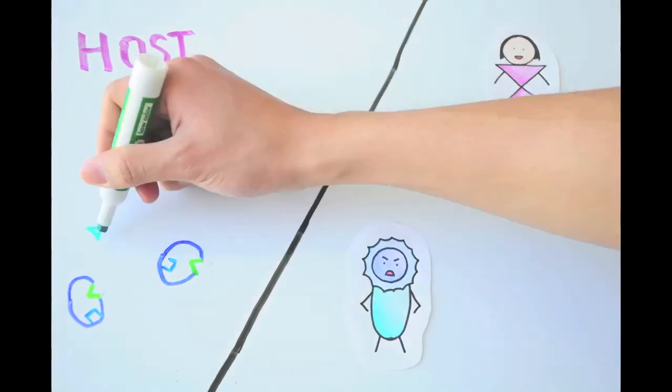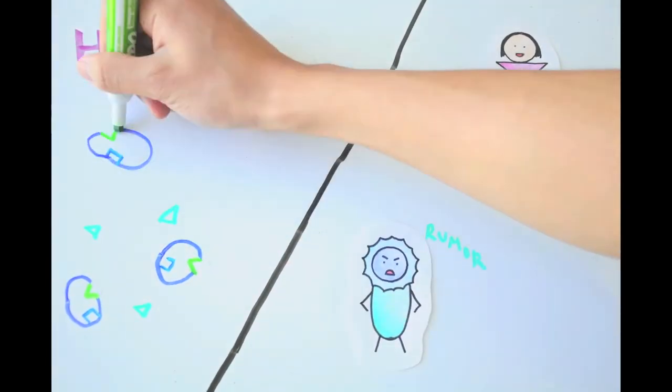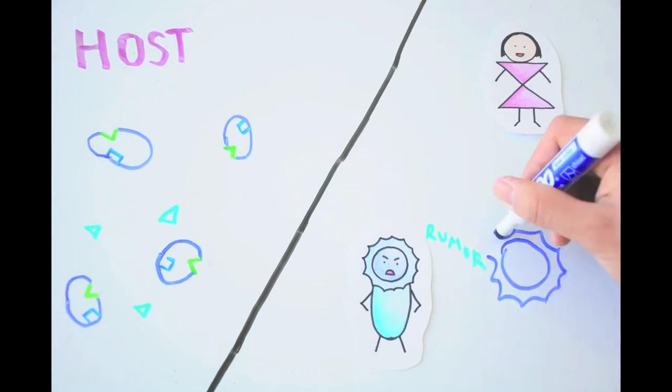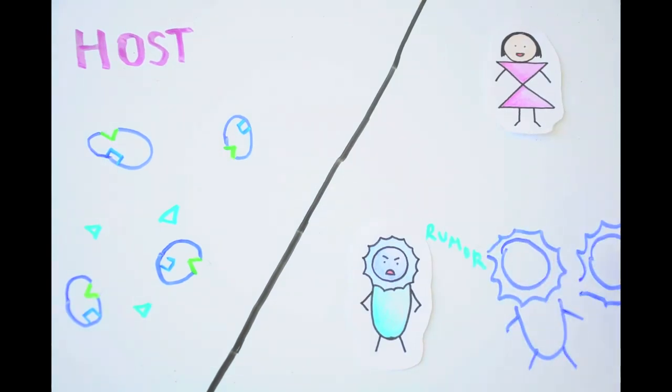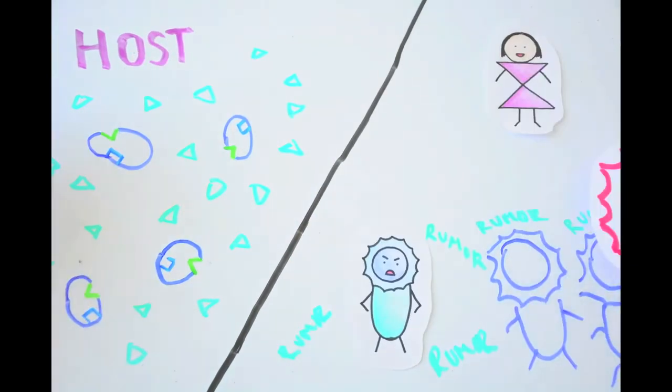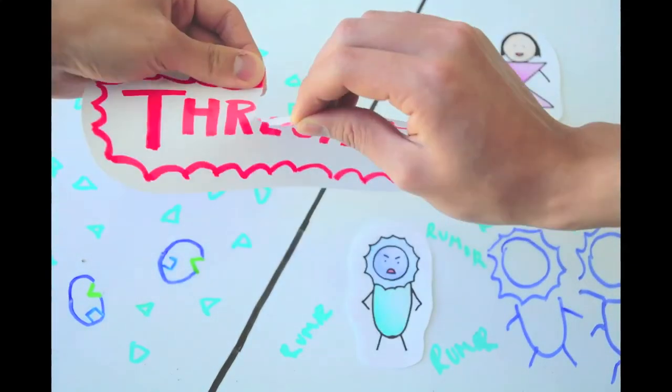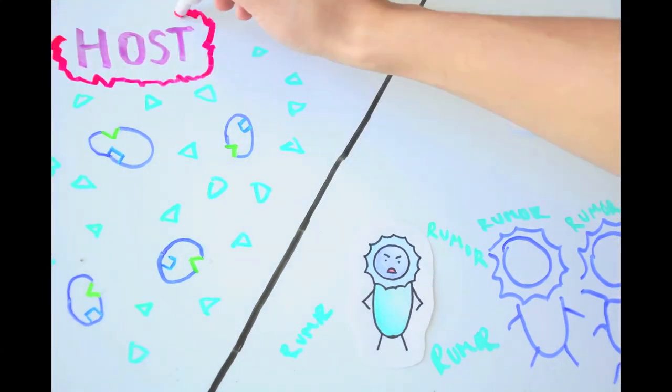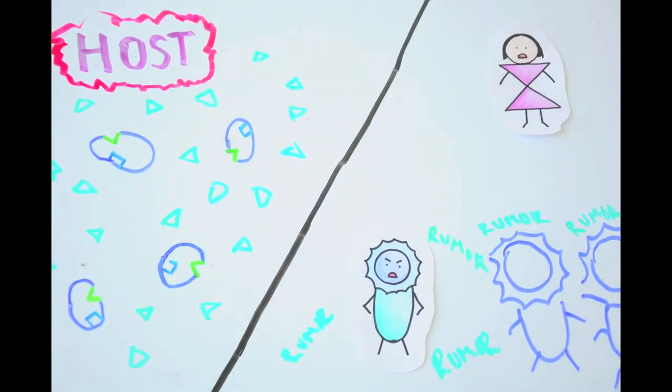These bacteria are continually producing auto-inducers, the molecules which send signals to other bacteria. When the bacteria haven't multiplied enough, they have little effect on the body. Just like how the rumour has little effect on Nikolai when very few people hear about it. It is only when the bacteria reaches a certain threshold limit that it starts acting together to infect the body and make it sick. The rumours get to Nikolai and she feels really bad.